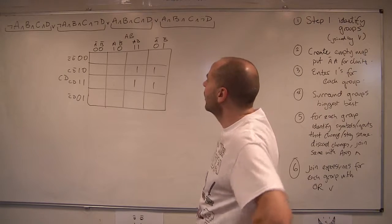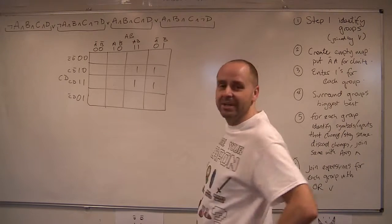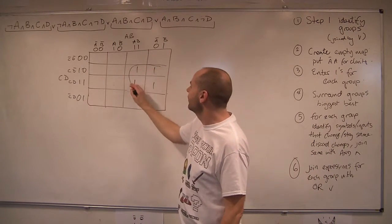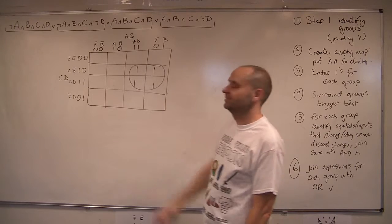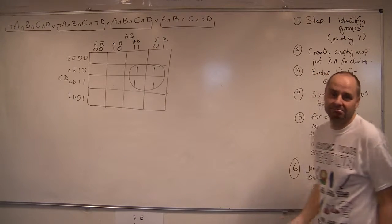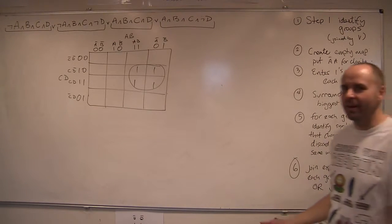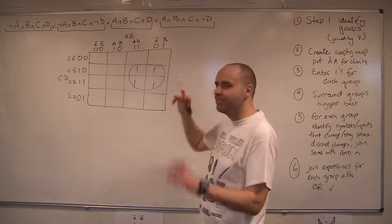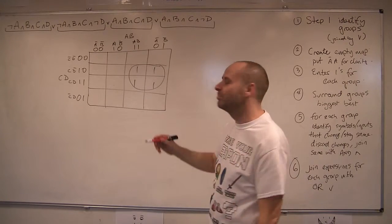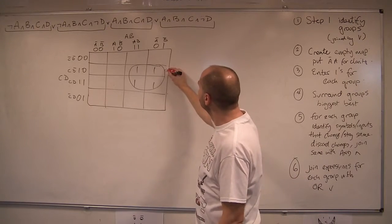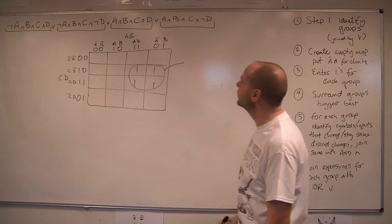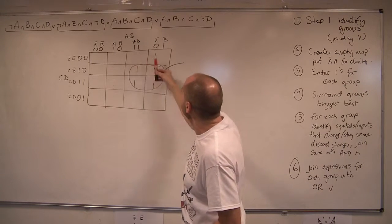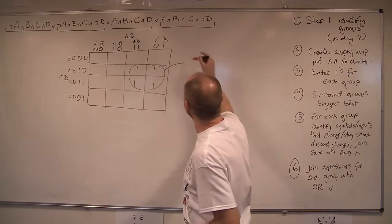Okay, right, the next bit is going to be easy — doing the grouping. It's going to be one group. That's it, no more. Don't have to make it more complicated than that. The biggest is the best — that will give you the simplest solution. Right, let's have a look for the changes. So on top first: we've got A, not A — so A changes.